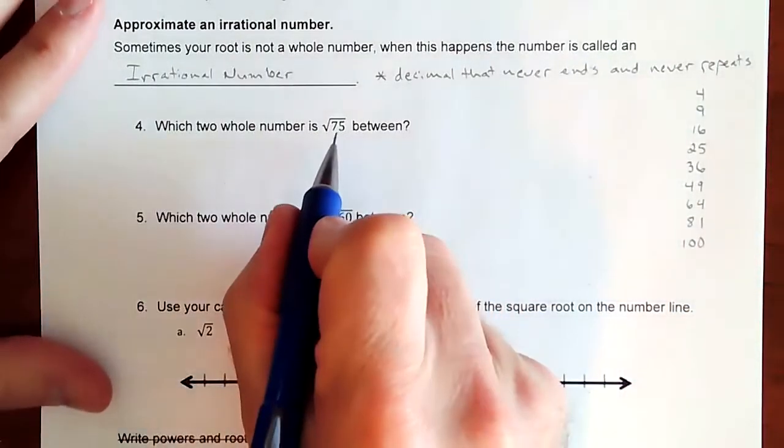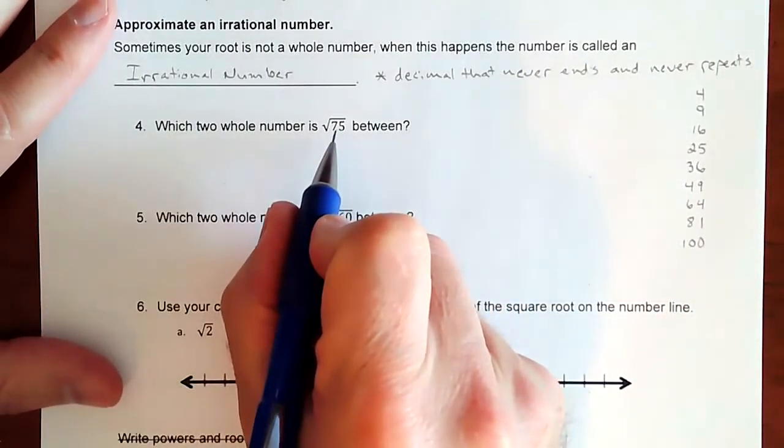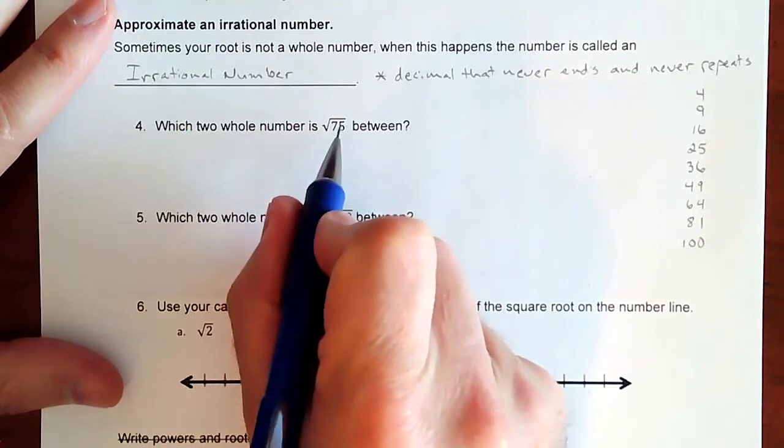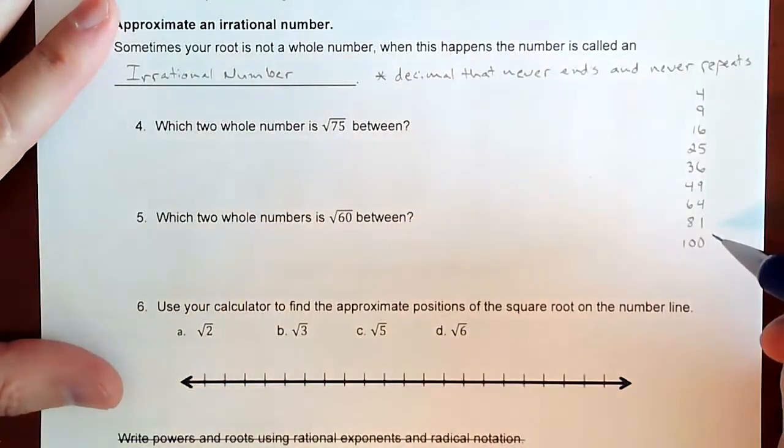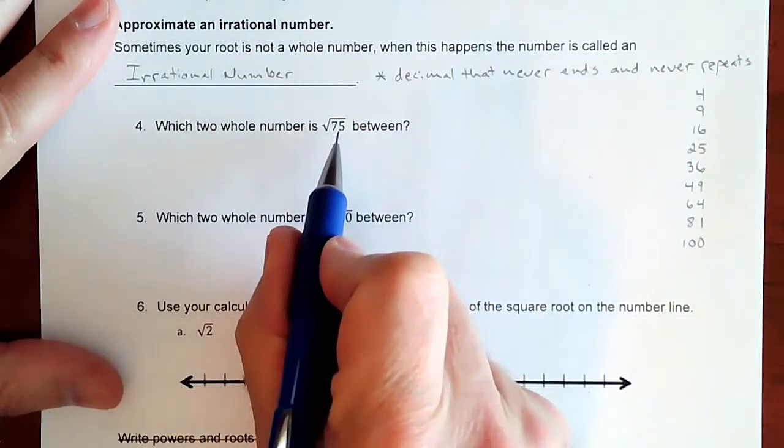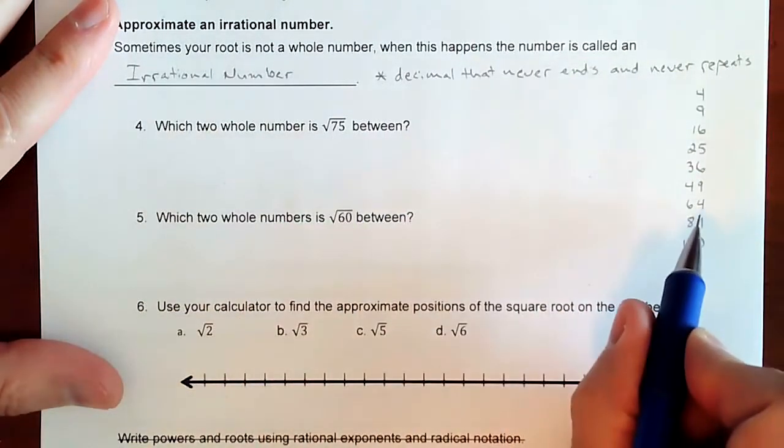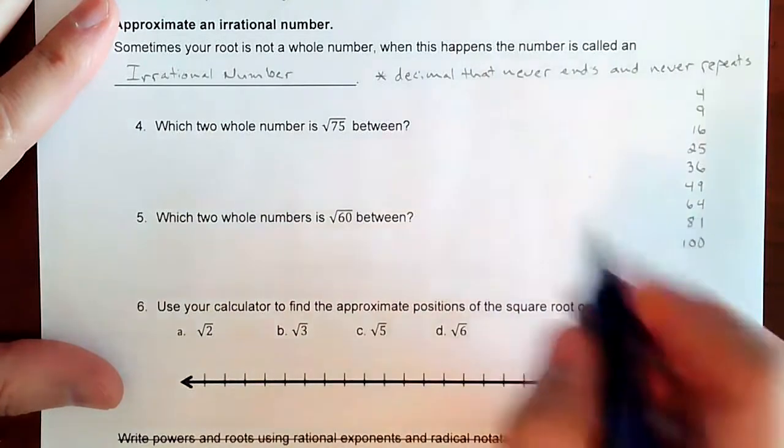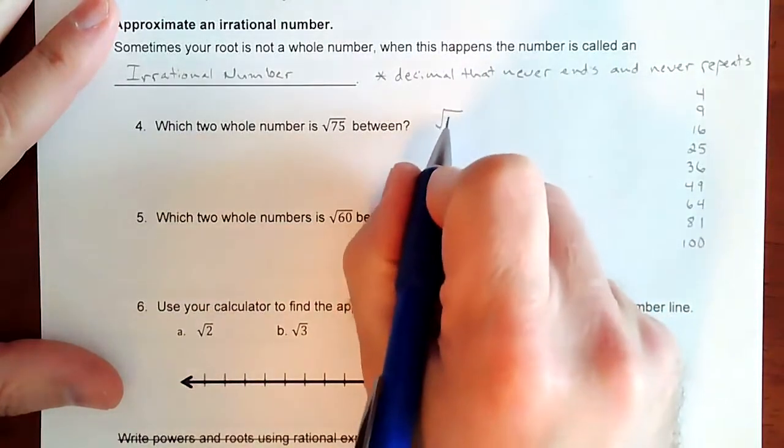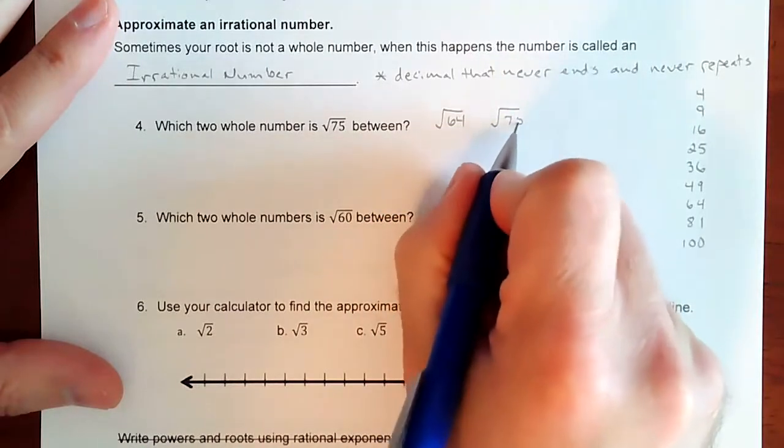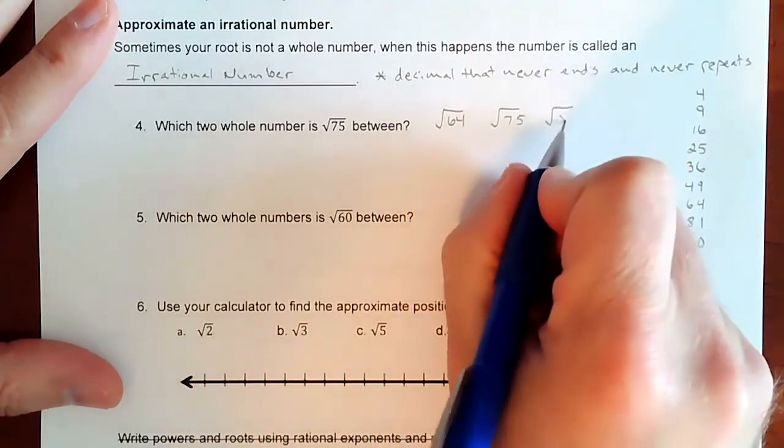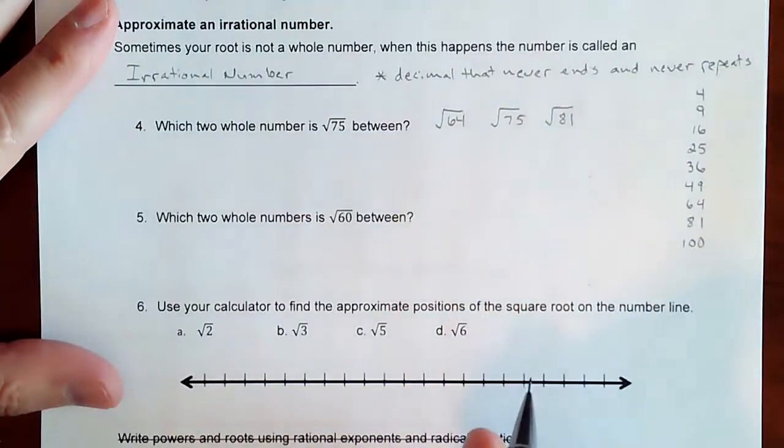So the way that you approximate this is actually a lot more straightforward than it seems. You don't have to totally trial and error this by any means. What you do is you look through this list and you surround 75 with the nearest perfect squares. So 75 would sit in between these. So what I'm going to do then is I'm going to put 64, 75, and 81.